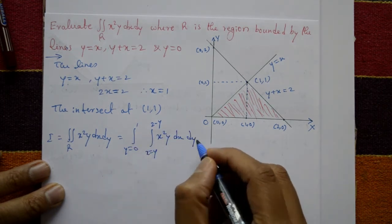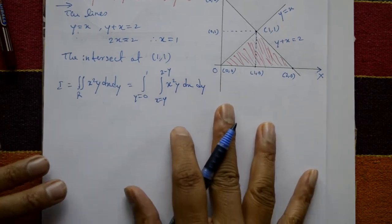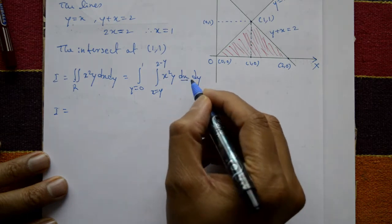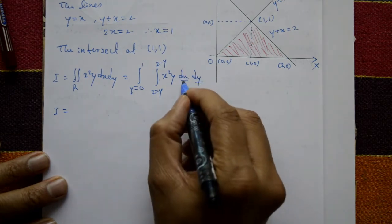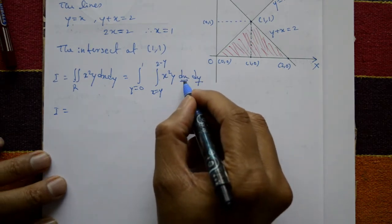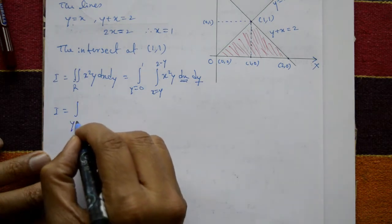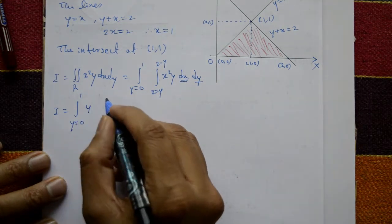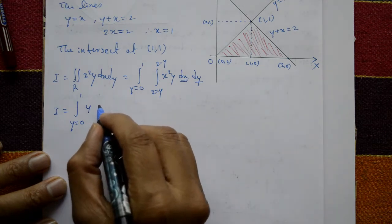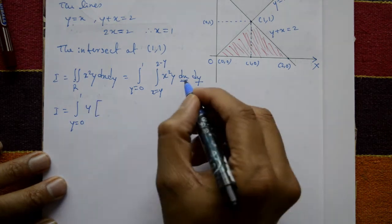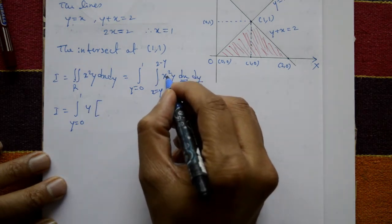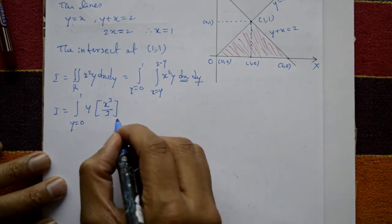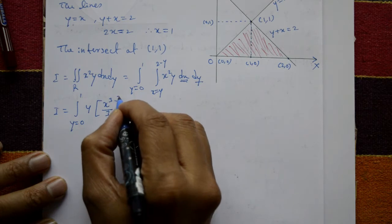Now integrate first with respect to x, treating y as a constant. The limits for y are 0 to 1. The integral of x squared is x cubed over 3, with limits x equals y to x equals 2 minus y, with respect to y.